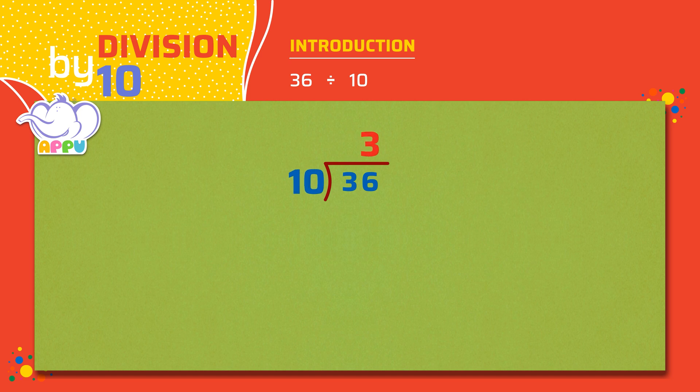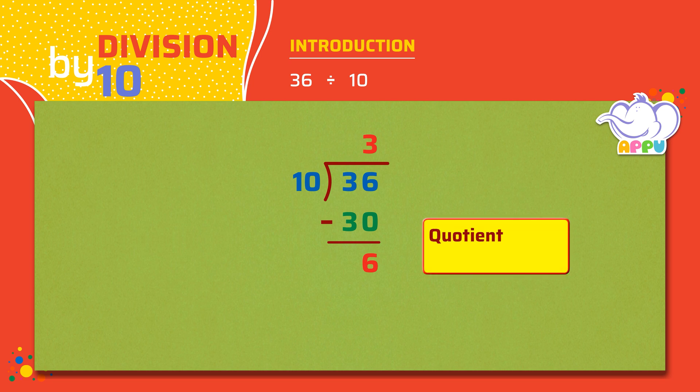We multiply 10 and 3, we get 30. We subtract 36 minus 30 equals 6. We stop division because 6 is less than 10. So the quotient is 3 and the remainder is 6.